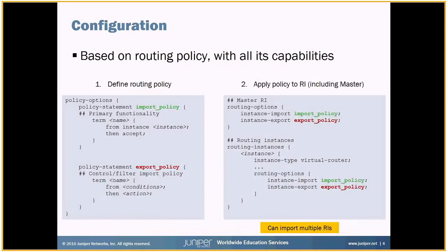In terms of configuration, these features are based largely on routing policy. There are two general steps: first, define the routing policy or policies, and then apply those policies as appropriate. On the left side, that first policy statement called import policy is the primary functionality related to the instance import statement. You can see a statement using 'from instance' where you define the source instance you want to import routes from and accept that. With that policy configured, you apply it on the right-hand side with the instance import statement, which can be used both at the master routing instance level and within particular routing instances.